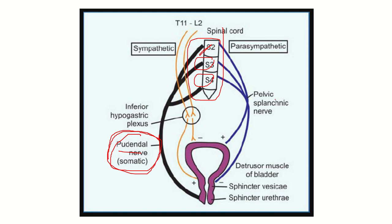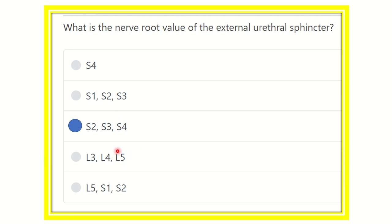We can also see the pelvic splanchnic nerve and the sympathetic nerve, which act on different parts of the urinary bladder. However, for the external urethral sphincter, the supply is the pudendal nerve — a somatic nerve with a root value of sacral 2, sacral 3, and sacral 4. So our final answer is sacral 2, sacral 3, and sacral 4, which corresponds to the pudendal nerve supplying the external urethral sphincter.